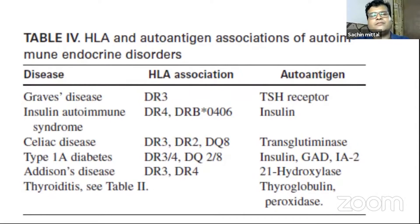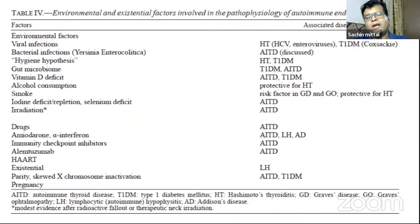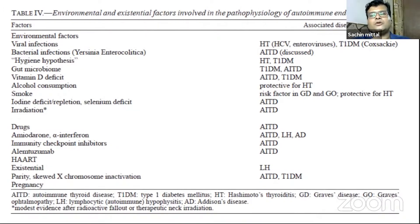Certain HLA types are more closely associated with certain diseases — with celiac, for example, DR3, DR2, DQ8, and others. Regarding environmental factors, these are all postulated factors with associated diseases: selenium deficiency with autoimmune thyroid disease, smoking with Graves' orbitopathy, bacterial infections or cow's milk exposure leading to type 1 diabetes, and certain drugs. Many of these associations are not strongly causative, but there is a significant association nevertheless.